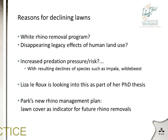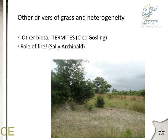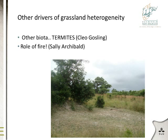The park is moving into a new rhino management plan, and grazing lawns are mentioned there as an important indicator of when and where you should remove white rhino. The kinds of things I've been talking about seem highly relevant to implementing these measures. One of my other PhD students, Cleo Gosling, will talk about termites and grazing lawns later, as there are obviously other very important drivers of grazing lawn presence. Termites is definitely one of them, and also the role of fire — Sally Archibald has done a lot of nice work on that.